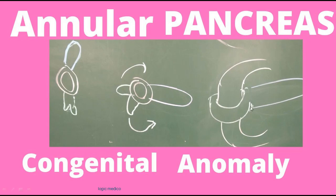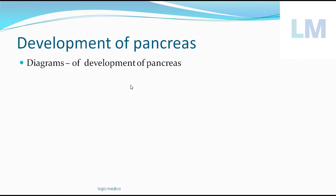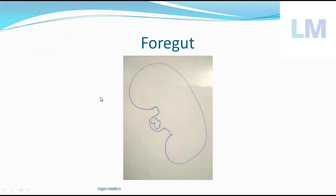So what is annular pancreas? It is one of the congenital anomalies of the pancreas. The development of the pancreas can be understood by diagrams and notes to replicate it in exams. The anomaly of the development of the pancreas is called annular pancreas. We'll look at its embryological basis in this video.